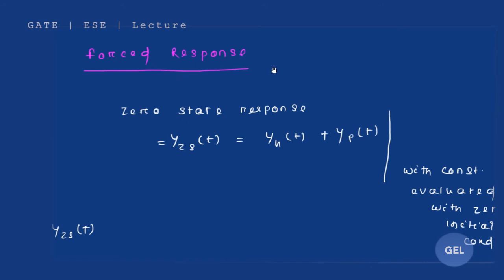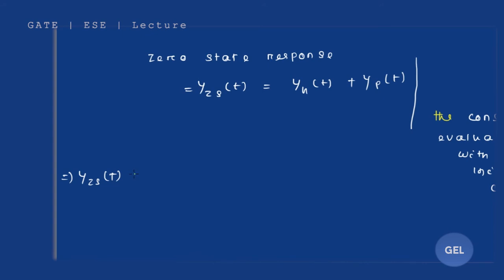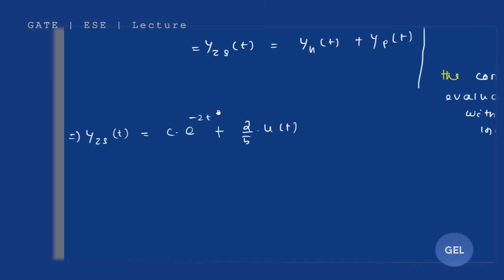The zero state response is calculated by adding the homogeneous and particular solutions, with constants evaluated at zero initial condition. So y_zs(t) = y_h(t) + y_p(t) = C · e^(-2t) + 2/5 · u(t). Now we need to find the zero state response by applying the zero initial condition.